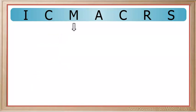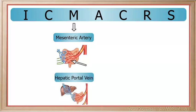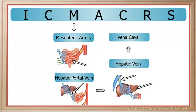M stands for the mesenteric artery. The mesenteric artery carries freshly oxygenated blood from the aorta to the small intestine. We will not discuss the mesenteric vein as it is not required for this course. We will however discuss a special vein called the hepatic portal vein. It is referred to as a portal vein because it transports blood from one organ to another. The hepatic portal vein transports blood from the small intestine to the liver to be detoxified. From the liver, the blood is transferred through the hepatic vein to the vena cava.